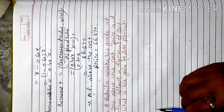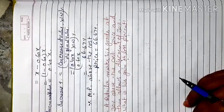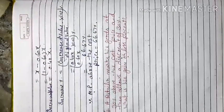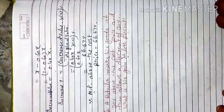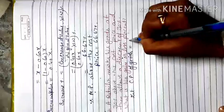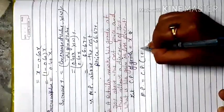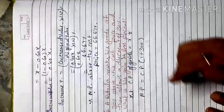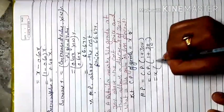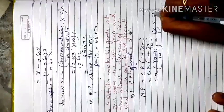Let cost price of goods = x rupees. Since the mark price is 30% above the cost price, using the increase formula: Mark Price = CP × (1 + 30/100) = x × (130/100) = 1.30x rupees. The discount percent is 30%, so: Discount Price = 30% of Mark Price = (30/100) × (130/100) × x = 39x/100 = 0.39x rupees.